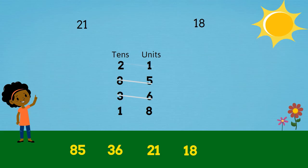Then 18 last. That's all our four numbers arranged from largest to smallest.